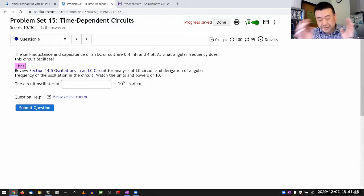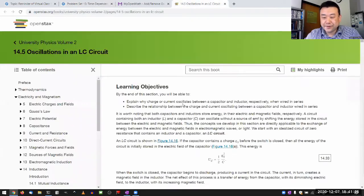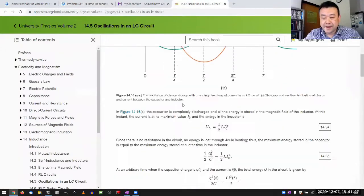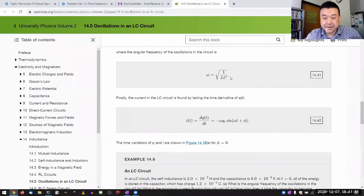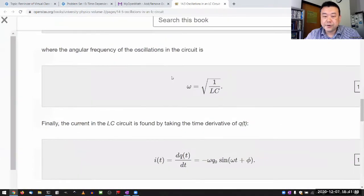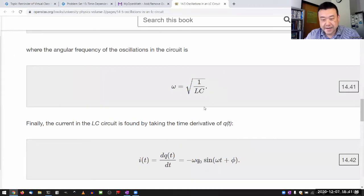In keeping with that, let me keep this problem simple and just look up the formula from the textbook. In section 14.5, it goes through the whole thing, and the main thing you're looking for is where the angular frequency of oscillation in the circuit is ω = 1/√(LC).